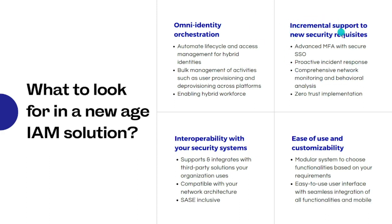Your IAM solution should evolve constantly to adapt to the latest security threats. Is just MFA enough today? It does a great job securing identities, but some MFA techniques — OTP sent to mobile, face unlock, fingerprints — can be bypassed. We should start looking at MFA techniques that are adaptive, contextual, and can even make your identity security passwordless. Your solution should also be able to proactively respond to incidents — identity and access management is no longer unidirectional.